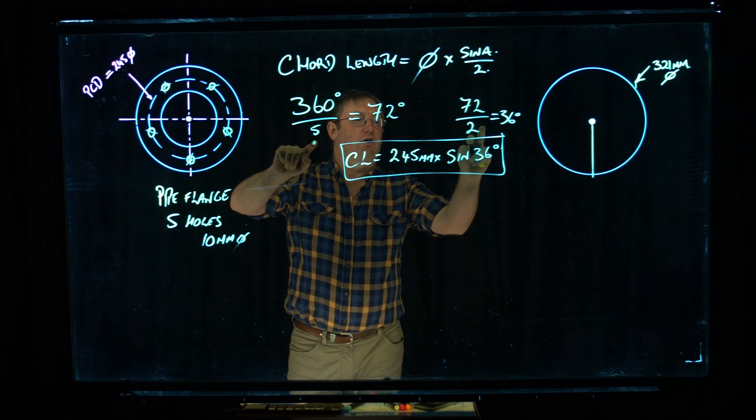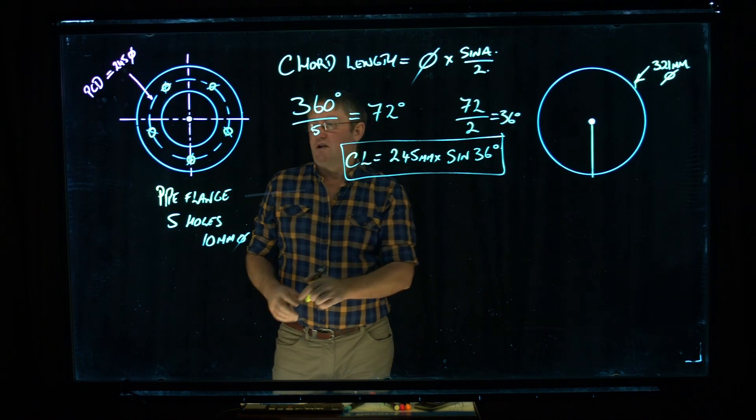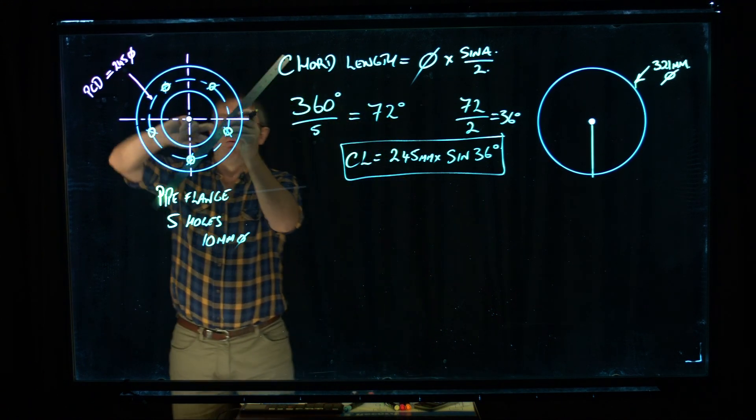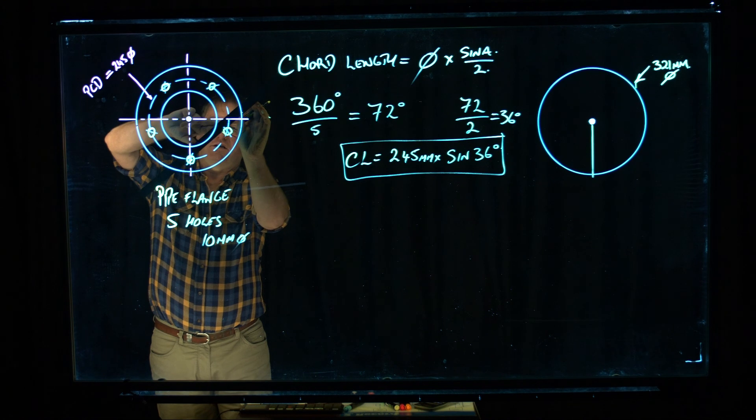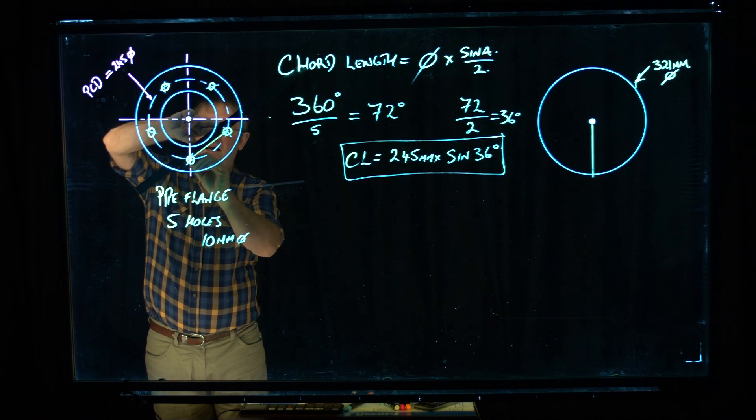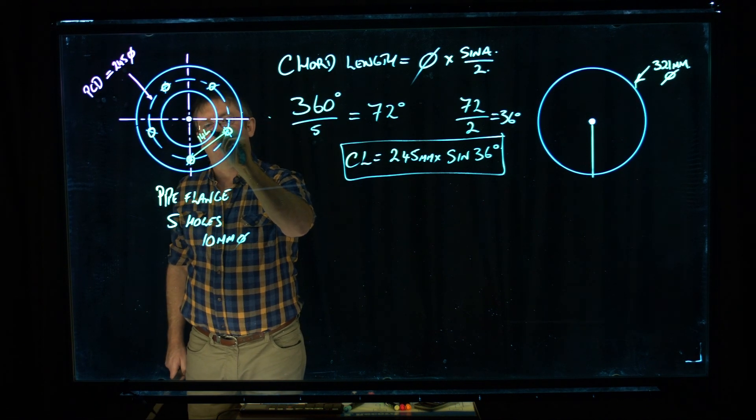You divide that by 2 and put that answer in with the sine figure and times it by the diameter, and you'll get a straight line length. So the straight line length, I use my rule across this particular circle. At this point here was, as I said, 144mm.